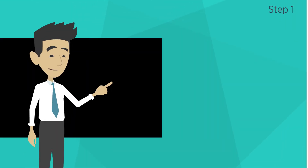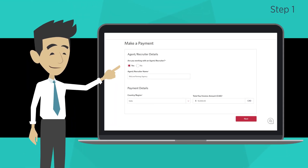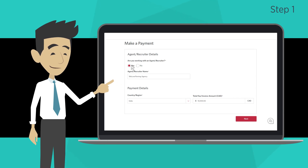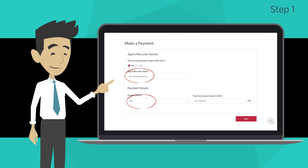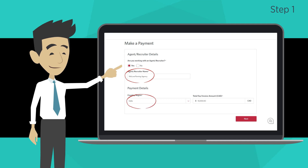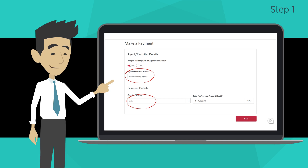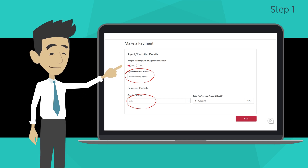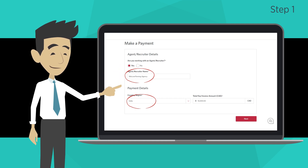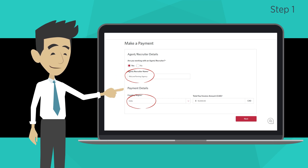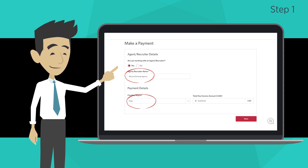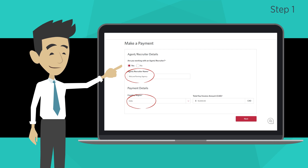Step 1: Make a payment. If you are working with an agent, click yes and enter their agency's name. Next, choose the country or region where the payment will be sent from. This might not be the country that you are living in. For example, even though you are a student from India, someone from outside of India might make your payment. If your payer lives in the United States, you must select United States of America from the drop-down menu. If your payer lives in India, you must select India from the drop-down menu.